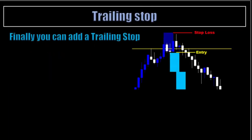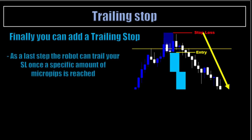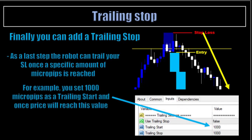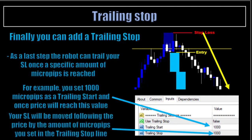Trailing Stop — that's the final step to manage your trade. As a last step, the robot can trail your stop-loss once a specific amount of micropips is reached. For example, you could move your stop-loss to break even after 1 reward, then put a second jump stop at 2 rewards to move your stop-loss to 1 reward or 0.5 reward — it's up to you. And after 2 rewards, you can trail your stop-loss by a set amount of micropips. For example, you set 1,000 micropips as a trailing start, and once price reaches this value, your stop-loss will follow the price by the amount of micropips you set — 1,000 in this example.